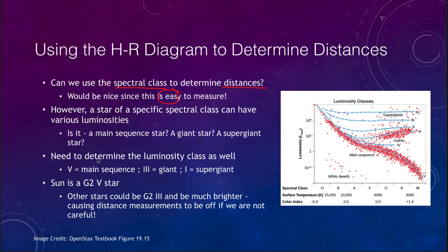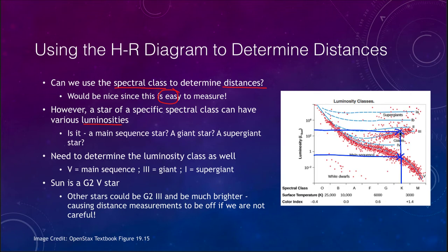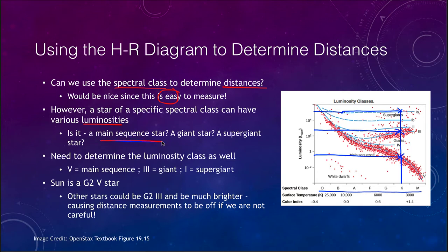Some of the difficulties are that stars have various luminosities — a star can have one spectral class but there can be a variety of possible luminosity classes for it. For example, a K-type star could be a main sequence or class five star with a certain luminosity, or it might be a giant star in the red giant region with a different luminosity, or it could be a supergiant star with an even different luminosity. So not only do we have to determine the spectral class, but we also have to determine the luminosity class — whether it is a main sequence star, a giant star, or a supergiant star — because that will make a difference in determining the distance.